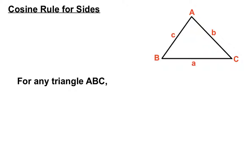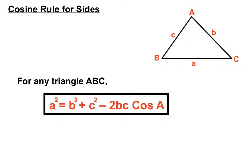So for any triangle ABC, a squared, that's one of the sides squared, equals b squared plus c squared minus two lots of BC times cos of angle A. So it's just a really special arrangement of sides and angles that's aimed at finding the length of one of the sides that we don't know yet.